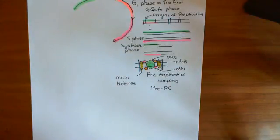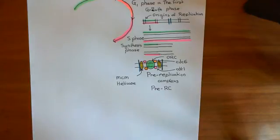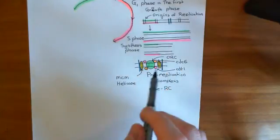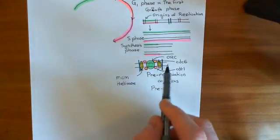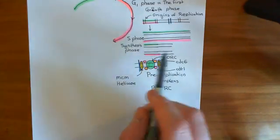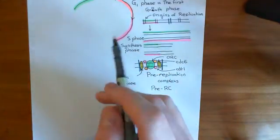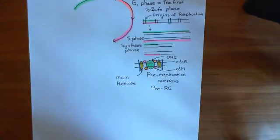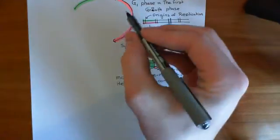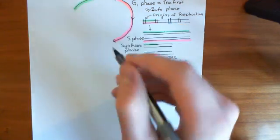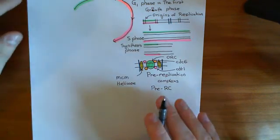Welcome to this next video on the G2M transition of the cell cycle. At the moment we're just having a reminder of what we've already studied. We've seen what's happening in G1 phase, and we've seen that we are assembling pre-replication complexes on all of the origins of replication. Now we are going to discuss the S phase, but before we can discuss the S phase, we need to discuss the G1/S transition.